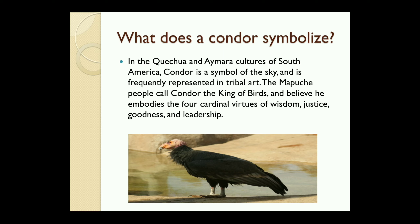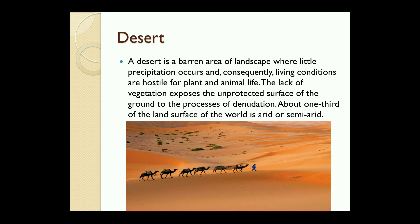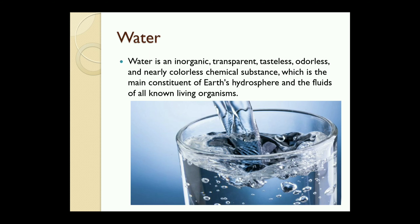Desert: a desert is a barren area of landscape where little precipitation occurs and, consequently, living conditions are hostile for plant and animal life. The lack of vegetation exposes the unprotected surface of the ground. About one third of the land surface of the world is arid or semi-arid.